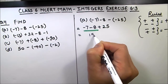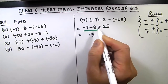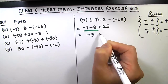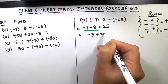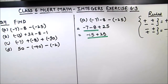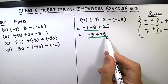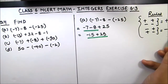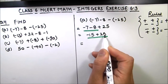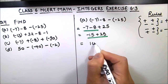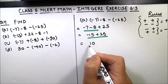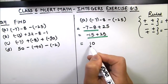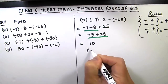The first two integers are minus 7 and minus 8. Same signs, so we add: 7 plus 8 is 15, with a negative sign, giving minus 15. Next we have minus 15 and plus 25 — opposite signs, so we subtract: 25 minus 15 is 10. The bigger number is 25, its sign is positive, so our final answer is positive 10.